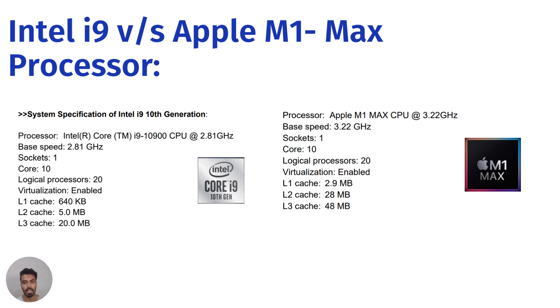The result we got was almost comparable, but no noticeable difference was observed. Both took almost the same time for execution. Apple had more L1 cache compared to the i9 10th generation processor, so the Apple M1 Max chip outperformed the Core i9 processor with a very slight margin.